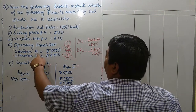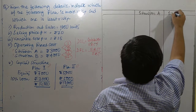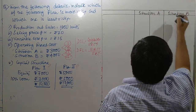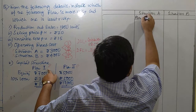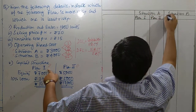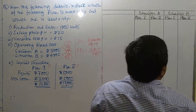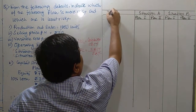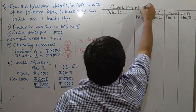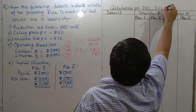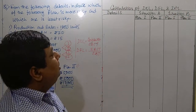Don't forget there are two situations — situation A and situation B. In every situation there are again two plans: Plan 1 and Plan 2. The heading over here will be: details, calculation of DOL, DFL, and DCL — combined leverage. Now let us portrait the income statement.